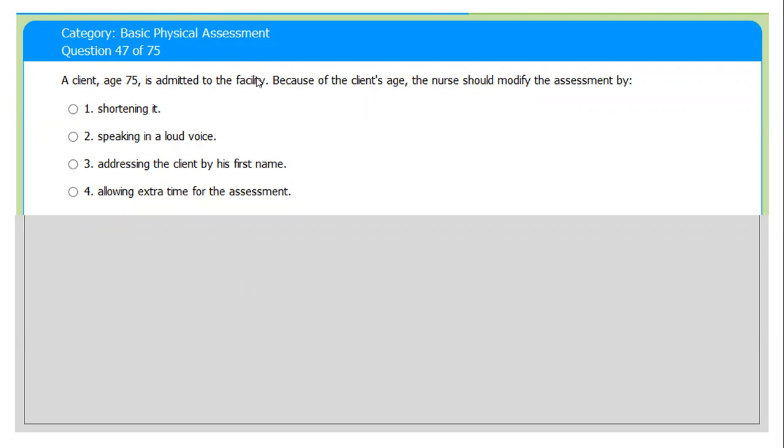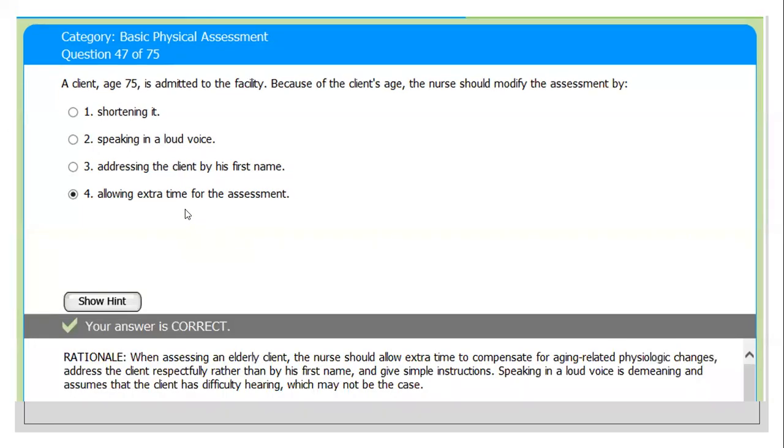Next question. A client, age 75, is admitted to the facility. The patient should modify the assessment. My patient is 75 years old and I need to go for assessment. Because of aging, what do I do? Number one: shortening the assessment. Number two: speaking in a loud voice - we do not need. Number three: addressing the client by his first name - it doesn't make any sense. Number four: allowing extra time for the assessment. Wonderful choice. Correct answer: you give extra time.